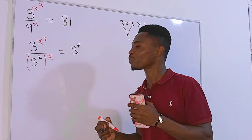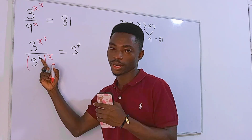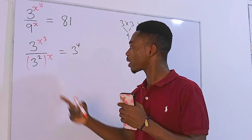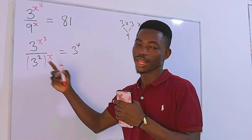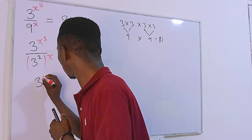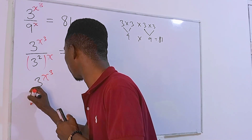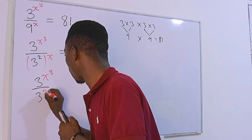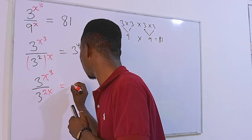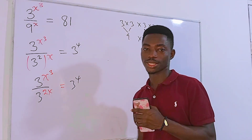Now, we have a number to the second power then raised to the power x. When this happens, we can multiply the powers. So we get 3 to the power x cubed divided by 3 to the power 2x, and this equals 3 to the fourth power.